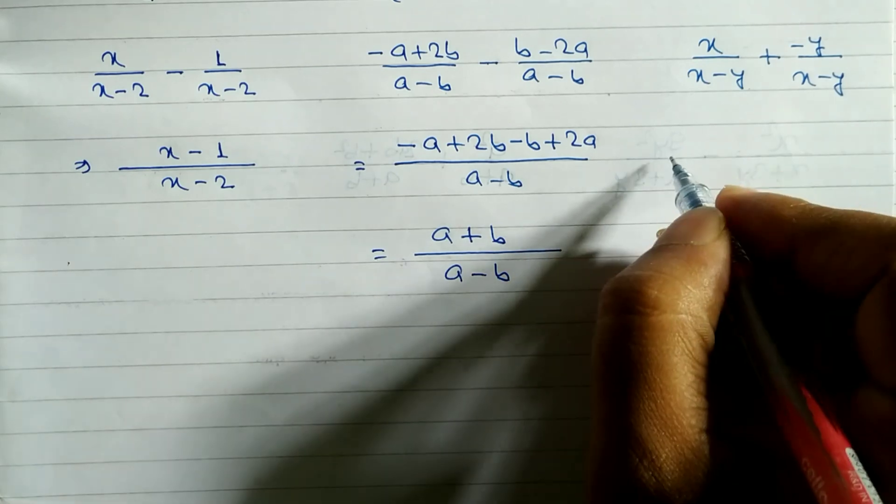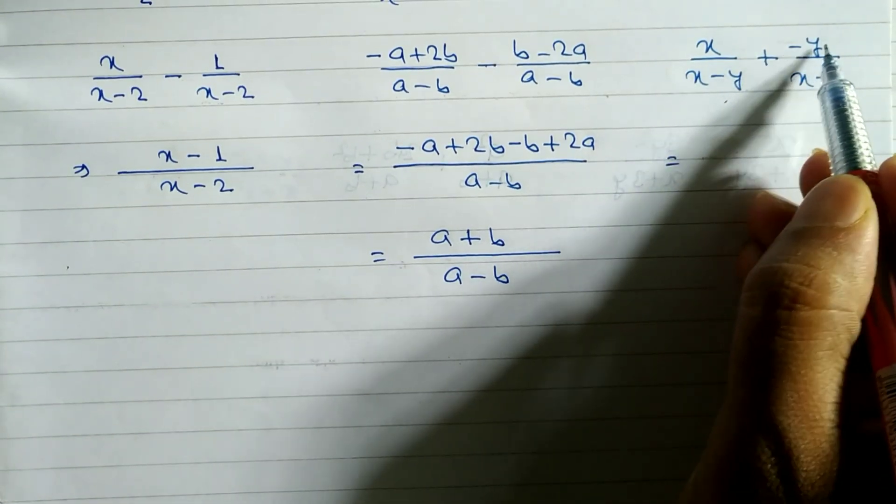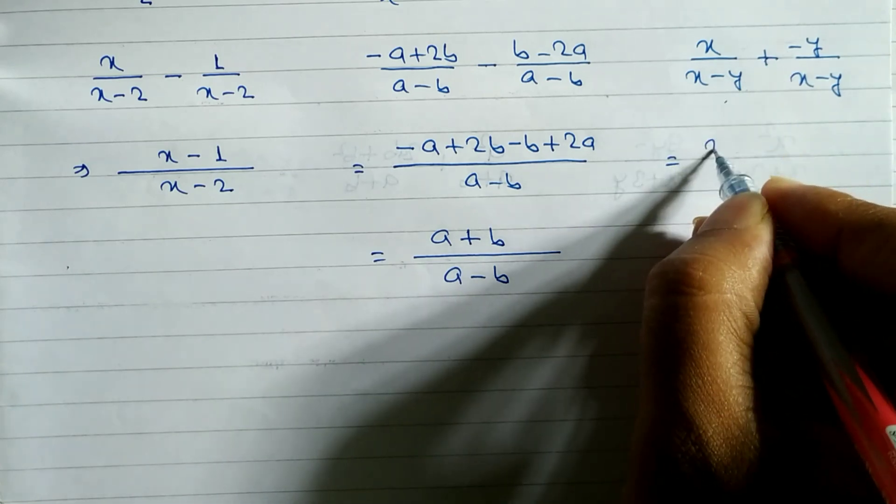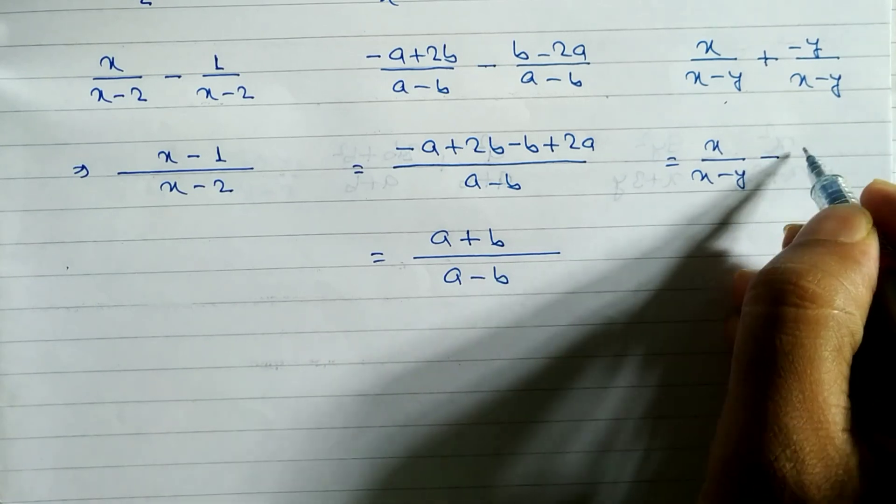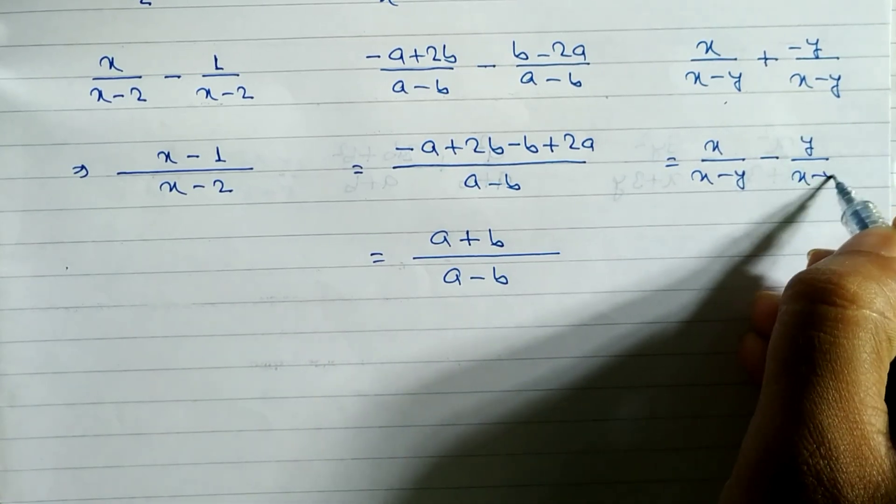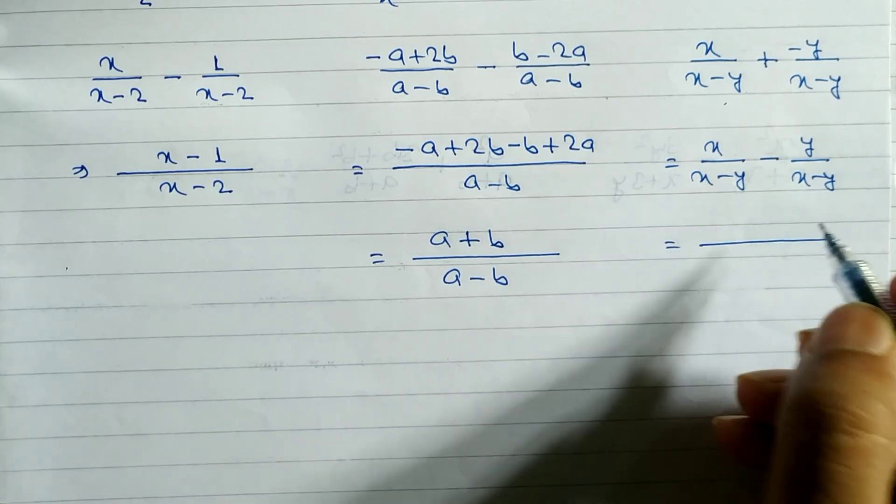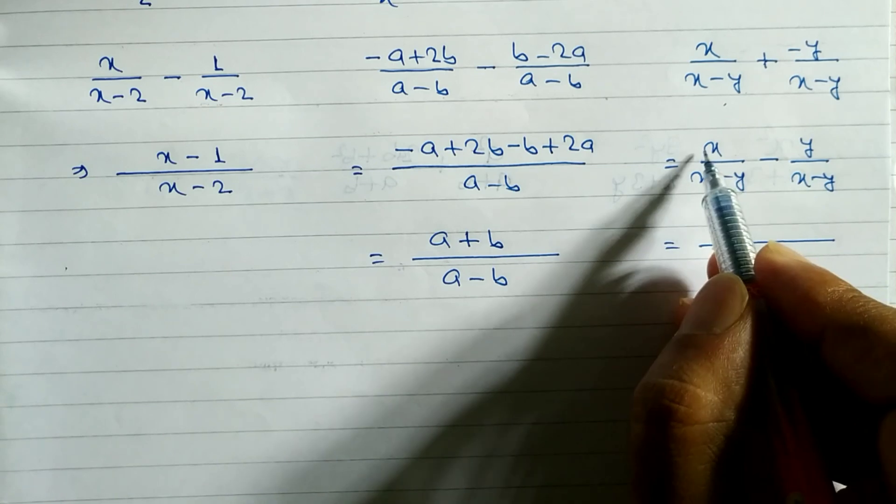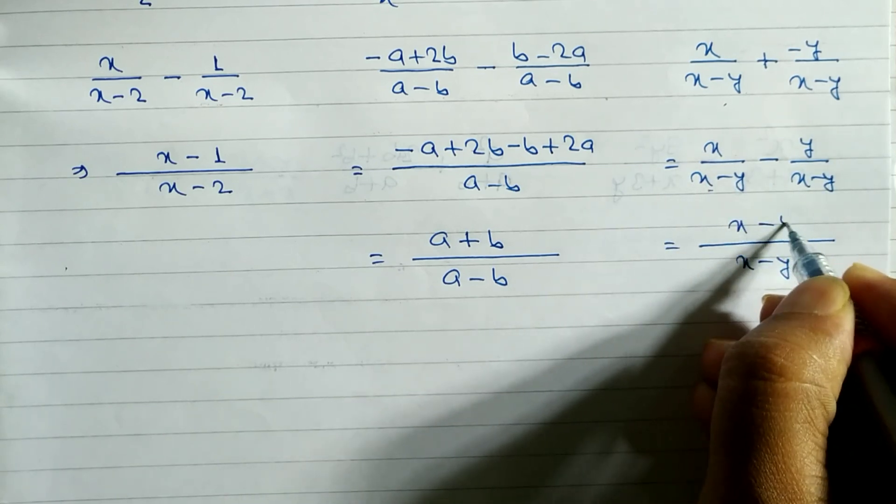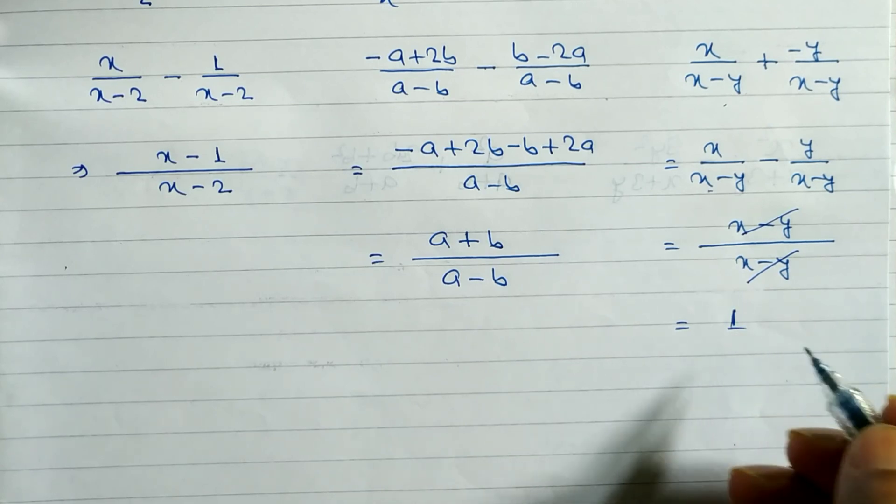Look at the next one. Here we have x by x minus y plus minus y by x minus y. We can write this as x minus y by x minus y. Now we take LCM. Again the denominator is same, so we write x minus y. If denominators are same, just write down the numerator: x minus y. This and this cancel, so the answer is 1.